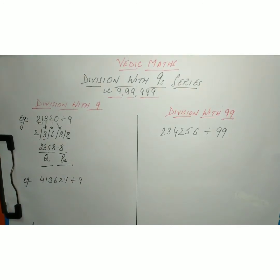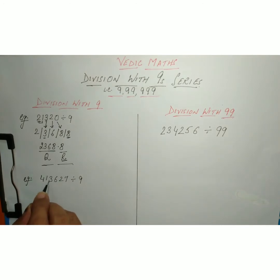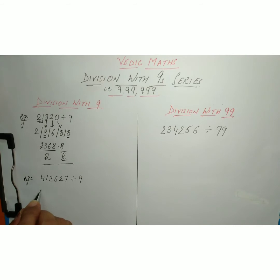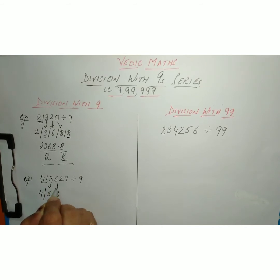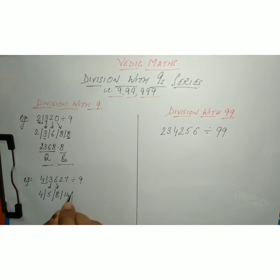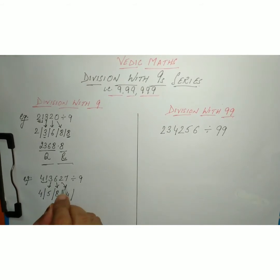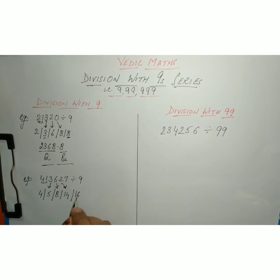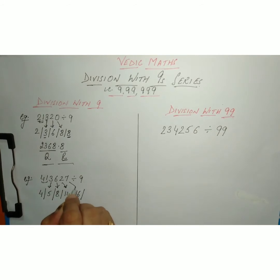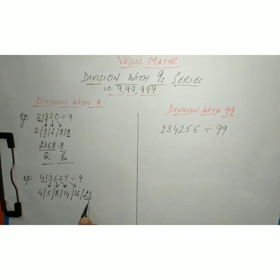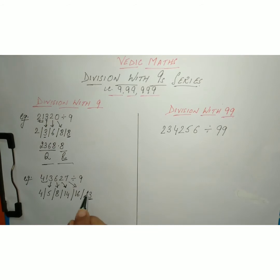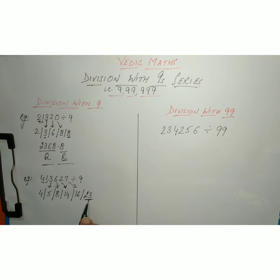Let us understand this with another example. Let us divide 413627 by 9. We write the first digit 4 as it is. Then 4 plus 1 is 5. Then 5 plus 3 is 8. Then 8 plus 6 is 14. Then 14 plus 2 is 16. Then 16 plus 7 is 23. Now we notice that 23, which comes out as the remainder, is more than 9.